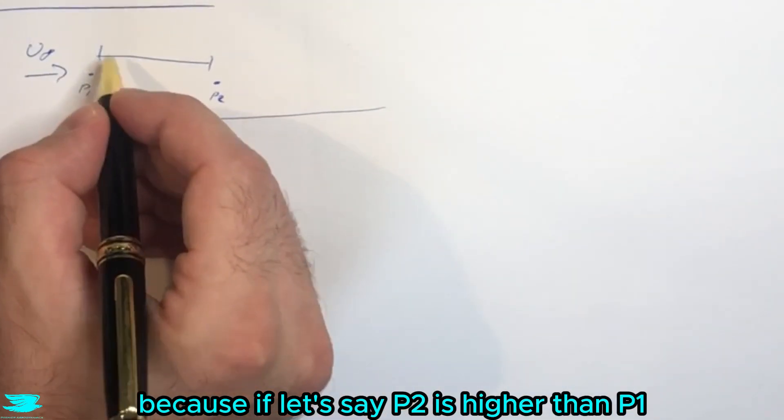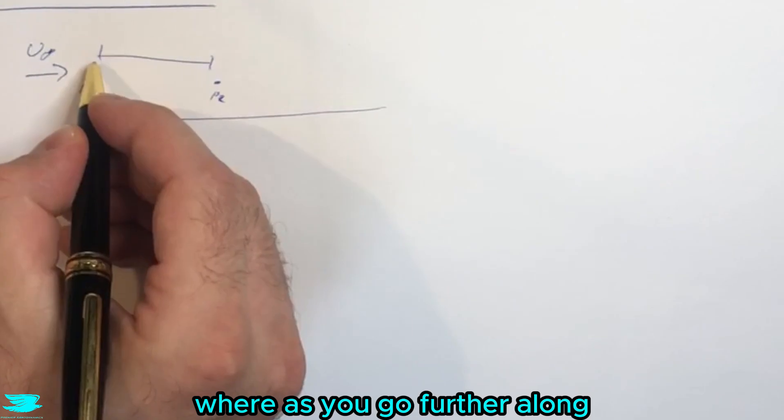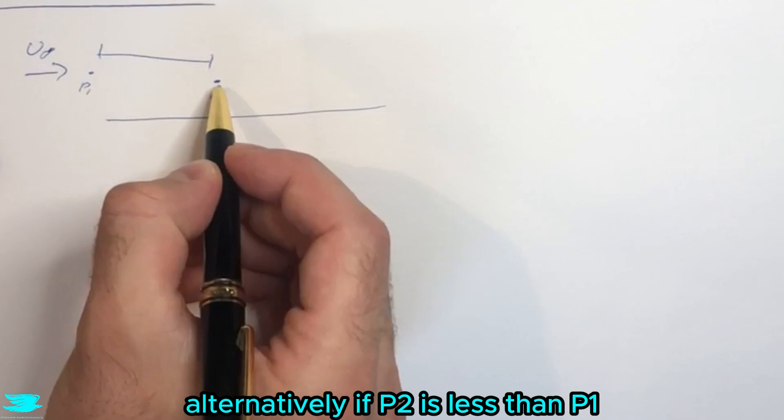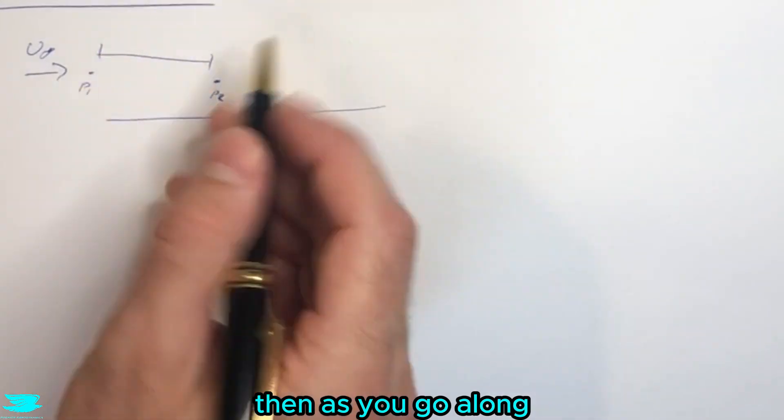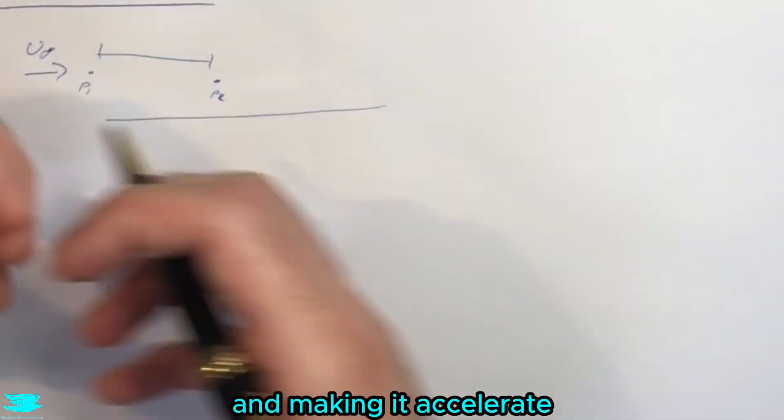If p2 is higher than p1, the pressure gradient is positive, and as you go further along there's pressure actually pushing back on the flow. Alternatively, if p2 is less than p1, then as you go along it's actually pulling the flow along and making it accelerate.